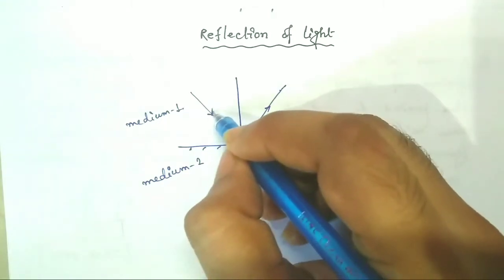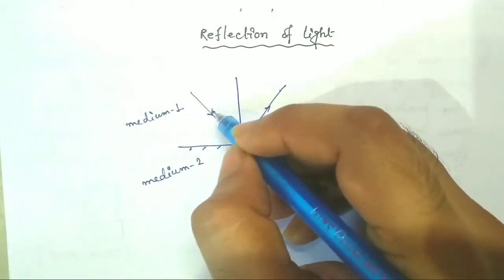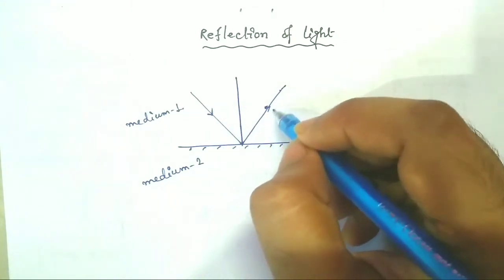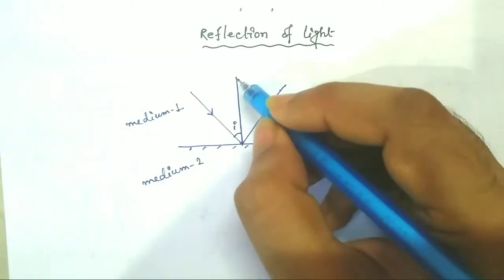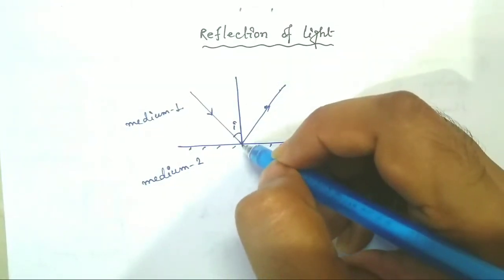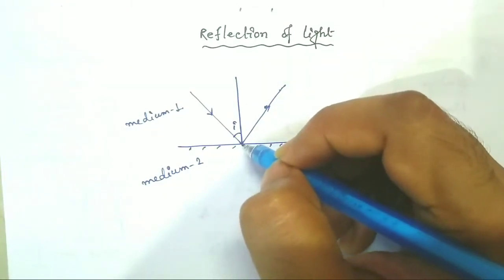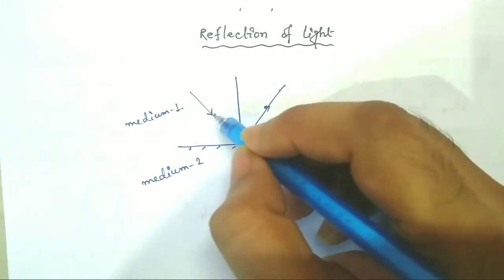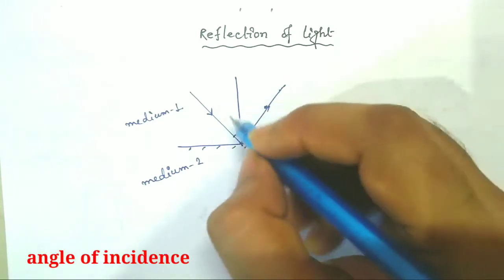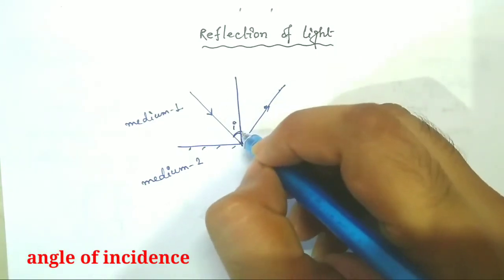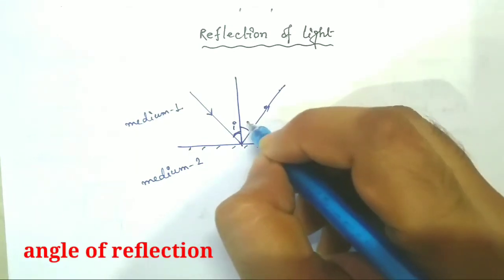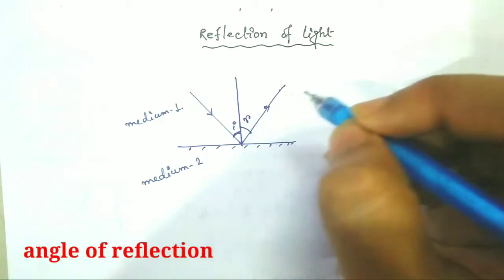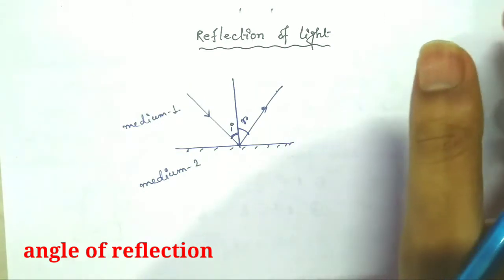This is my incident ray of light, and this is my reflected ray of light. This is the normal to the plane of separation between two media. The angle between the incident ray and the normal is called the angle of incidence I, and the angle between the reflected ray and the normal is called the angle of reflection.